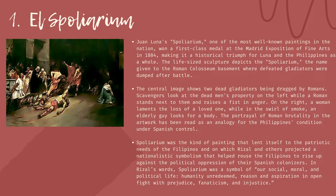On the right, a woman laments the loss of a loved one, while in a swirl of smoke, an elderly man looks for a body. The portrayal of Roman brutality has been read as an analogy for the Philippines conditioned under Spanish control. Spolarium lent itself to the patriotic needs of the Filipinos, and Rizal and others projected a nationalistic symbolism that helped rouse Filipinos to rise against the political oppression of their Spanish colonizers. In Rizal's words, Spolarium was a symbol of their social, moral, and political life — humanity unredeemed — reason and aspiration in open fight with prejudice, fanaticism, and injustice.